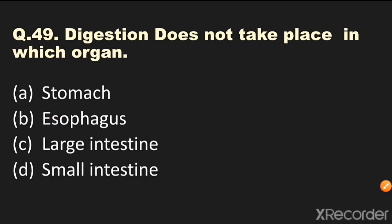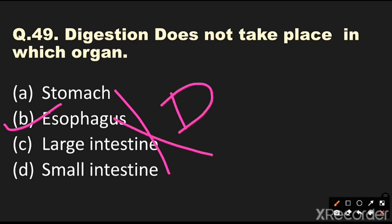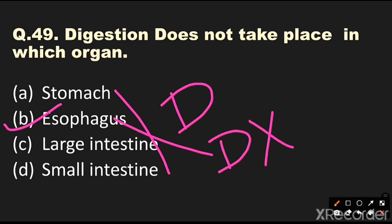Question number 49: Digestion does not take place in which organ? Options are stomach, esophagus, large intestine, or small intestine. The answer is esophagus. All four — stomach, esophagus, large intestine, and small intestine — are part of the digestive system, but digestion does not take place in the esophagus.